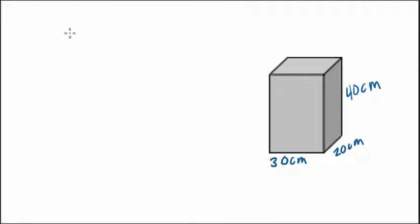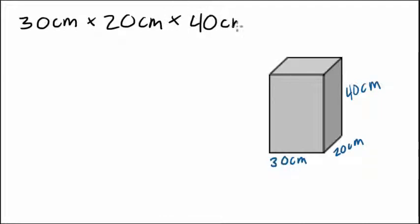So in this case we have 30 by 20 by 40. And now volume tells us that we can multiply these numbers—the height, the length, and the width—and we can get an answer.